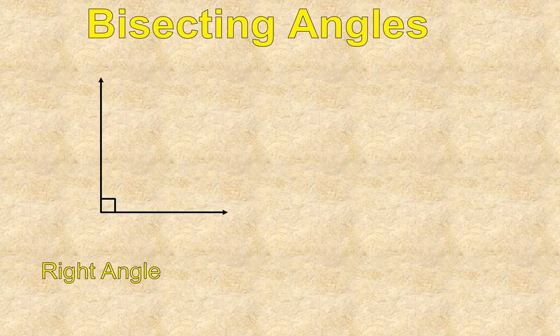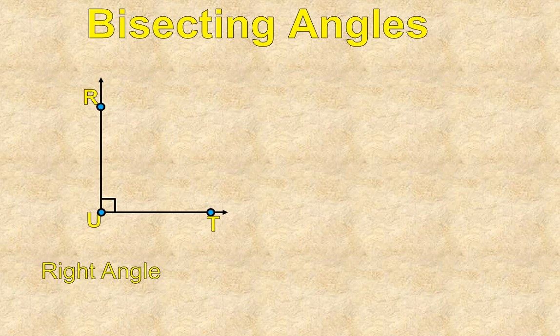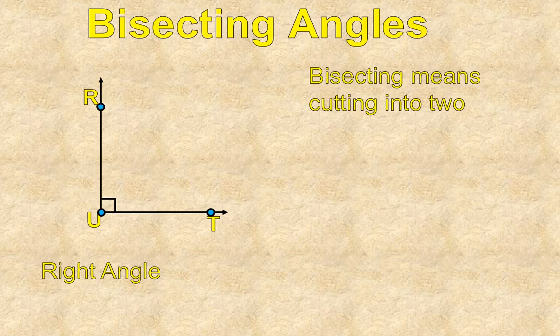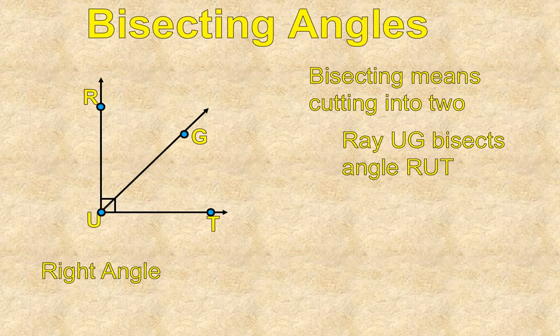Now let's add a little bit to this. Bisecting an angle, this angle, as we discussed in the previous video, is called angle RUT, and bisecting it means cutting it in half or cutting it in two. So the ray UG bisects the angle RUT.